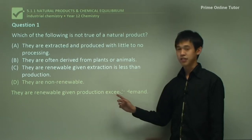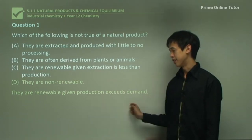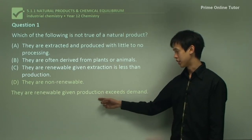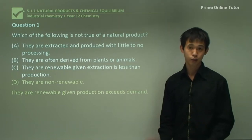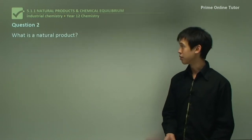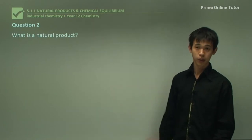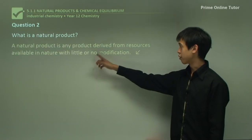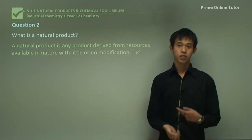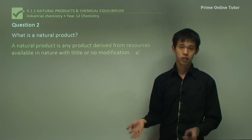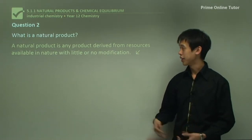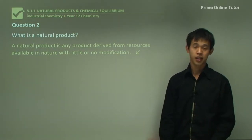Option D states they are non-renewable - that's not true, as they are renewable given production exceeds demand. As long as we can keep producing them faster than we consume them, we can call them renewable. Moving to Question 2: define a natural product. A natural product is any product derived from resources available in nature with little or no modification - rubber, wool, and wood can all be taken from the environment and used with minimal modification.